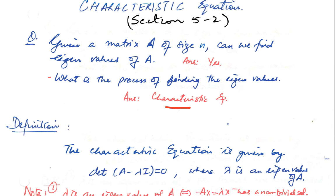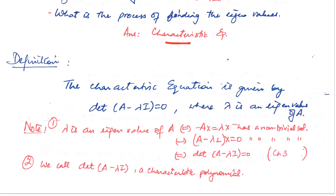A characteristic equation is given by the determinant of the matrix A minus lambda I equals 0, where lambda is the eigenvalue corresponding to the matrix A. Keep in mind we are dealing with square matrices only.